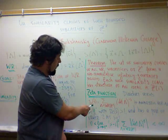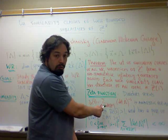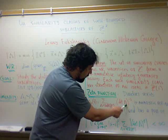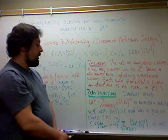to be simply the sum running over all well-rounded sub-lattices lambda of Z² of determinant of this sub-lattice lambda to the power of minus S, where S is a complex variable.